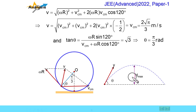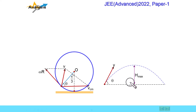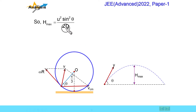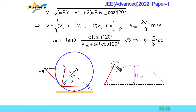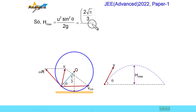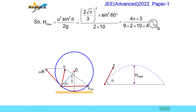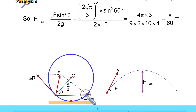Now we need to find S max — the maximum height raised by the particle in projectile motion. The formula is S max equal to u squared sin squared theta divided by 2g. U is v equal to 2 root pi divided by 3, theta is pi by 3 (60 degrees), and g is 10. After calculation, S max equals pi by 60 meter. But we need height from the ground, not from the point of detachment. The height of the detachment point above the ground is r minus r cos 60 (from the geometry of the disk).